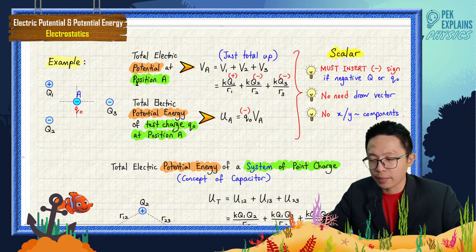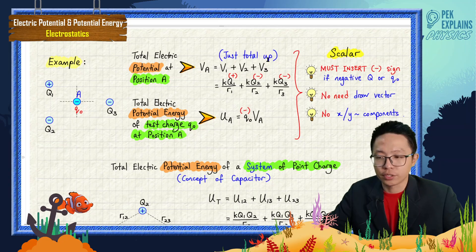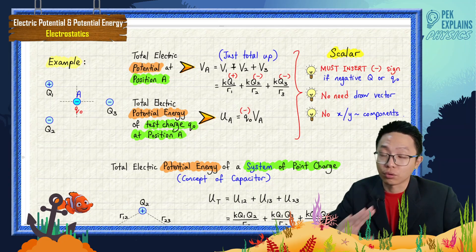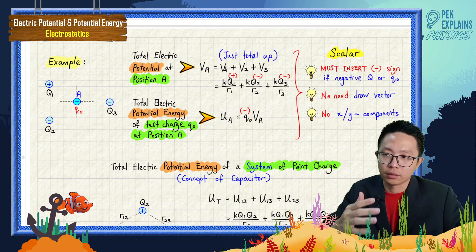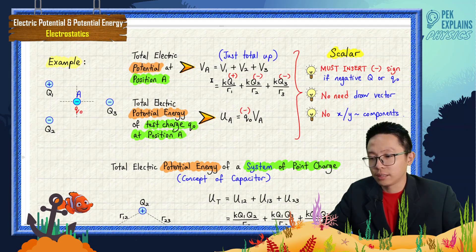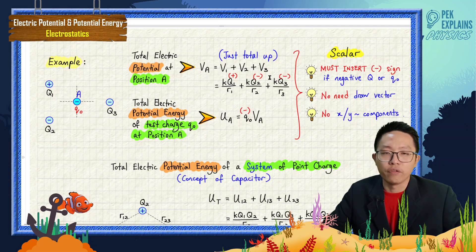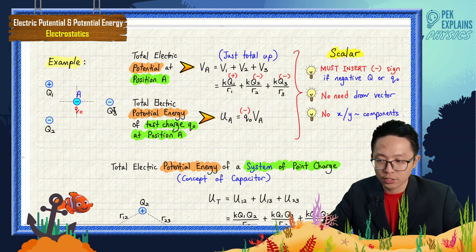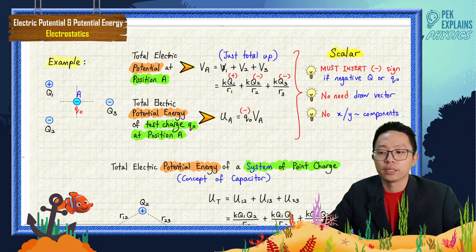For potential, if I want to find potential at position A, you just total up because it is a scalar quantity. For force and electric field, you cannot just total up — you must resolve into XY components before you can add up. This one, you can straight away add up. We have three point charges Q1, Q2, Q3, so we have three potentials V1, V2, and V3. If you have four point charges, then you have four potentials.